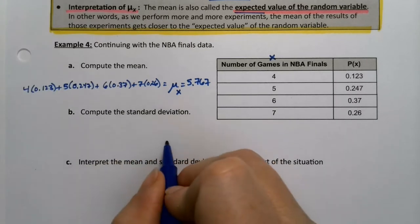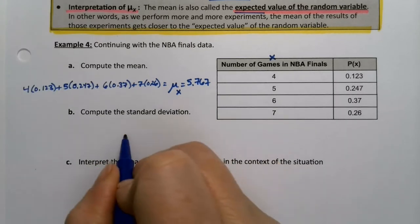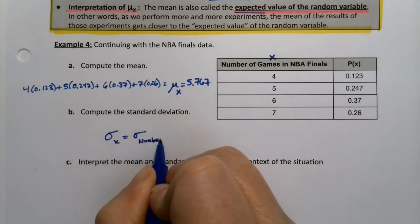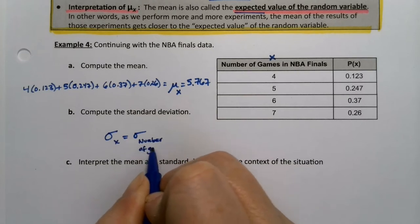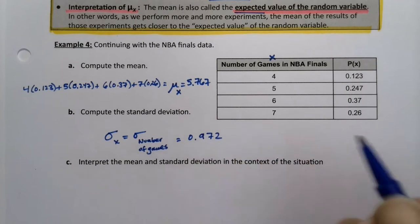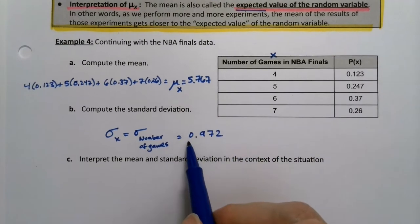So this is the σ. I just brought it right here. σ for X, which is the σ of the number of games, is 0.972, right there.